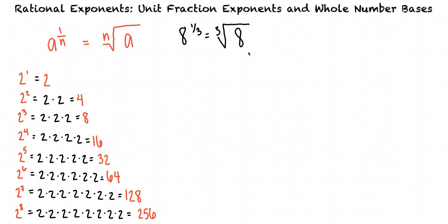This is the same as the cube root of 8. That means we want to determine what number will equal 8 when it's used 3 times in multiplication. Well, in the powers we listed out, it looks like 2 to the third power equals 8. So would the cube root of 8 be 2? That's right. Since 2 times 2 times 2 equals 8, that means the cube root of 8 equals 2. And since the cube root of 8 is the same thing as 8 raised to the power of 1 third, 8 raised to the power of 1 third equals 2.